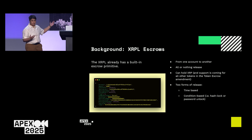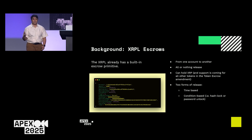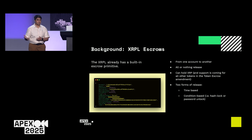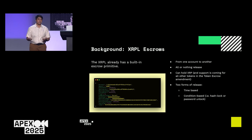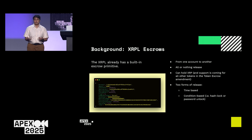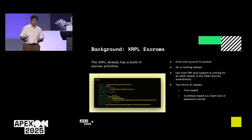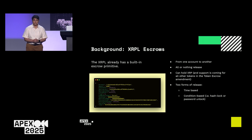This is an example of what it looks like. You're sending funds from one account to another, from the origin to the destination. It's an all-or-nothing release — either you're transferring all the funds at once, or you don't transfer anything at all. Right now it can only hold XRP, though support is coming soon for other token standards: IOUs and MPTs.